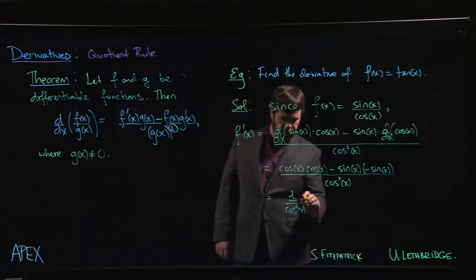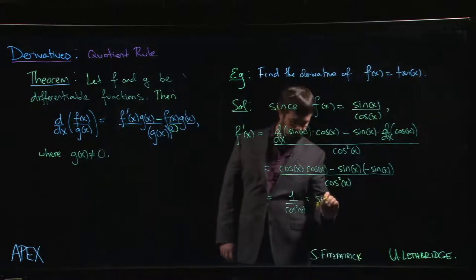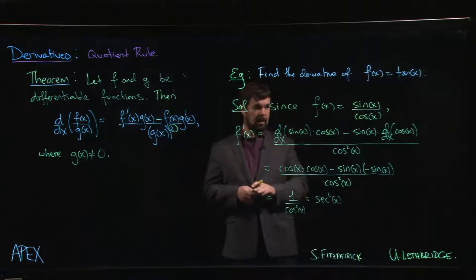In fact, we can go one step further. We can say one over cos is secant, so we can write this as secant squared x. And generally, when you look up the derivative of the tangent function, that's the answer you're going to find.